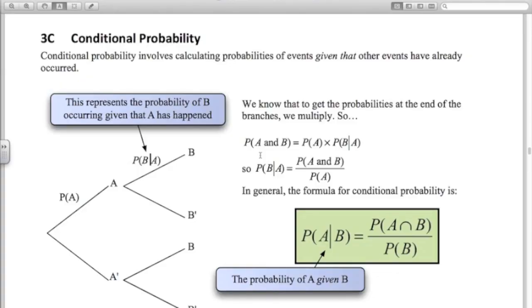Hi and welcome to this third video on probability. In this video we're going to be looking at conditional probability. Conditional probability involves calculating probabilities of events given that other events have already occurred.